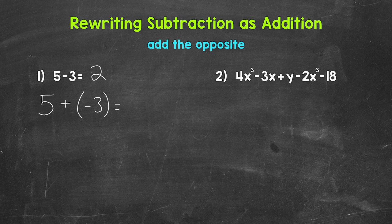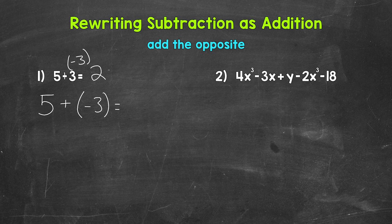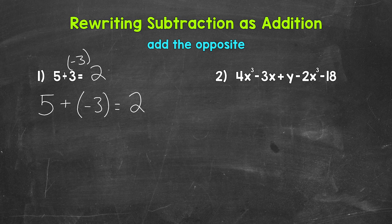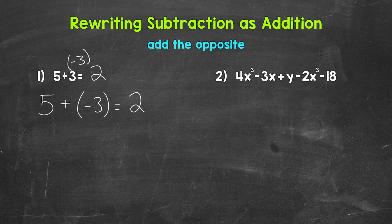So we are changing this to addition and then the opposite of positive 3 is negative 3. Again, add the opposite. We are still starting with that 5 and decreasing the value by 3. We end up with 2 this way as well. So by adding the opposite, we're not changing the overall value of everything. We still get the same solution.